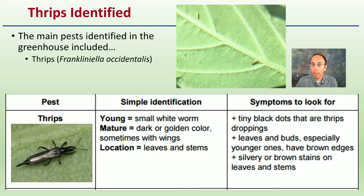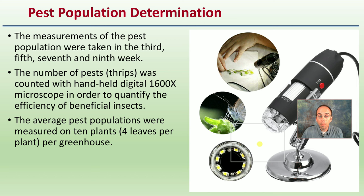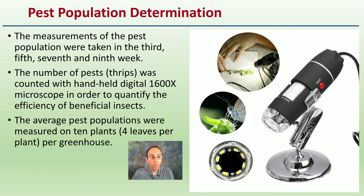Thrips were the main focus of this study. This gives you an image of what they look like on a leaf. Basic measures for management included visual estimation of infestation, recording of pest species and populations, and comparison of infestations between the two greenhouses. Only the nymph and adult stages were counted, not the egg stage. Pest populations were measured at weeks three, five, seven, and nine using a handheld digital 1,600X microscope, with counts taken from 10 plants and 4 leaves per plant per greenhouse.